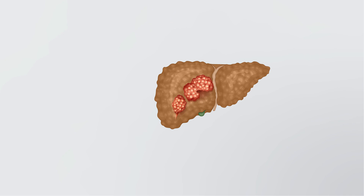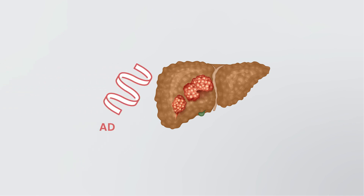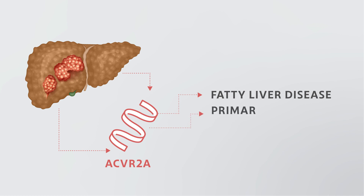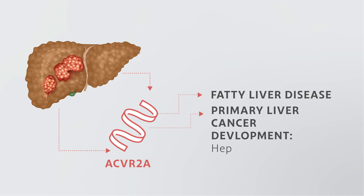One mutated gene in diseased livers, called ACVR2A, has been previously found to be mutated in some cases of primary liver cancer, known as hepatocellular carcinoma (HCC). This means that these mutations could be involved in liver cancer development.